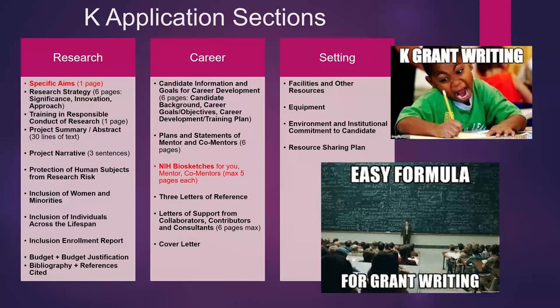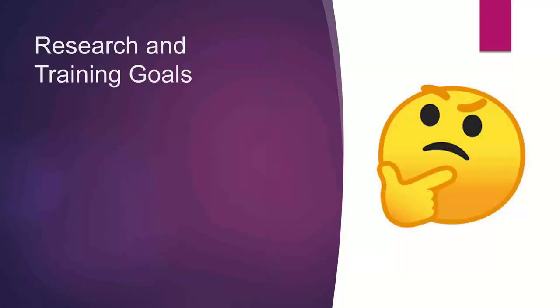Starting today in terms of K grant writing, there's an easy formula for grant writing that takes 13 weeks to get through — the same length as this course. Today we're going to cover specific aims and NIH biosketches.